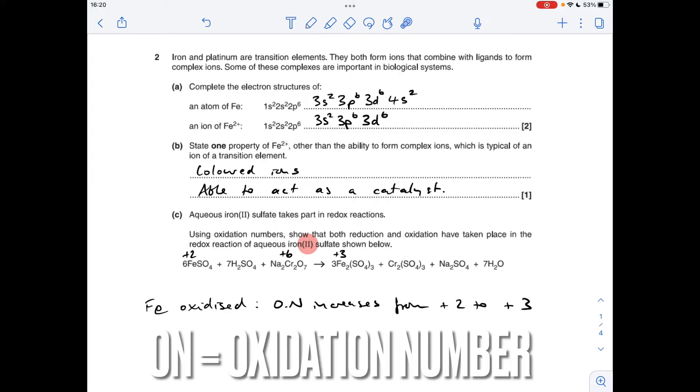If we have a look at the chromium in this, so again sulfate's 2-, there's 3 of those, so it's a bit like this one, so it's going to be +3 for those 2 chromiums. So chromium's reduced, it's gone from +6 to +3.